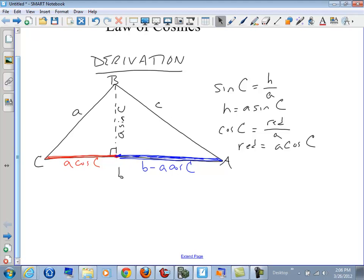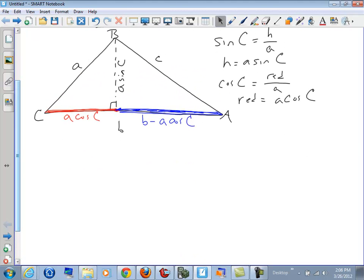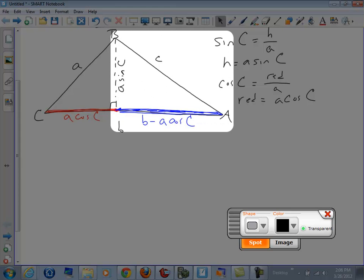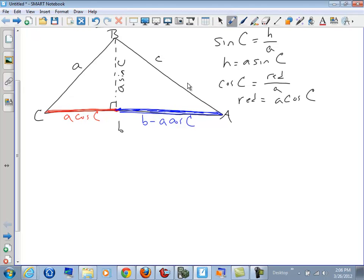Now, we can use the triangle on the right-hand side. So I want to focus on the triangle here, and I want to write the Pythagorean theorem for the three sides of that right triangle. So c squared, that's the hypotenuse squared, is equal to the sum of the square of the legs. So a times the sine of C squared plus the quantity b minus a times the cosine of C all squared.